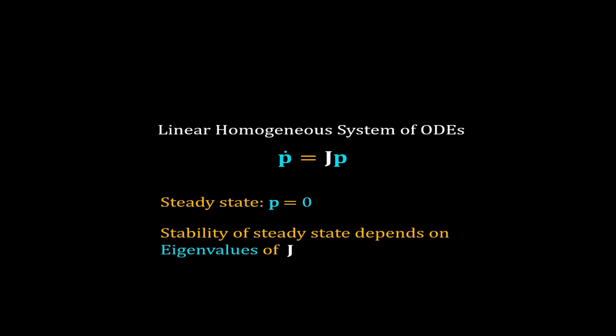If the determinant of J is not equal to 0, then there will be only one steady state at P and Q equal to 0. And we can decide the stability of this steady state by calculating the eigenvalues of J. In fact, we can use a trace determinant plot of J to identify the stability.